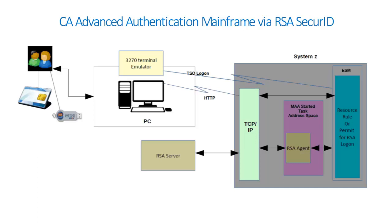At logon, the ESM will determine if the user is in the RSA rule. As architected, everything runs on ZOS up to the point where we actually call the RSA server. When set up and active, users are required to enter the RSA token value, which changes frequently, making it far more difficult for cybercriminals to gain access.